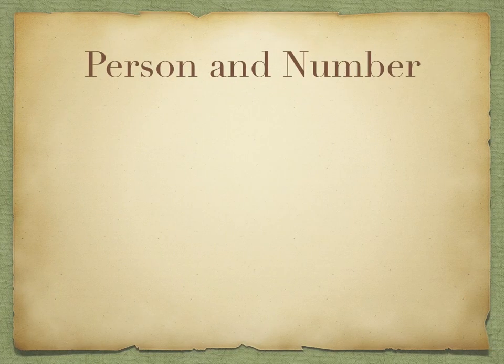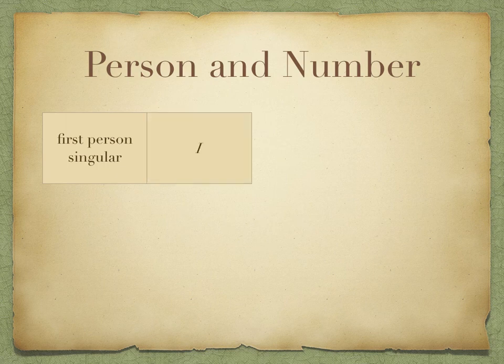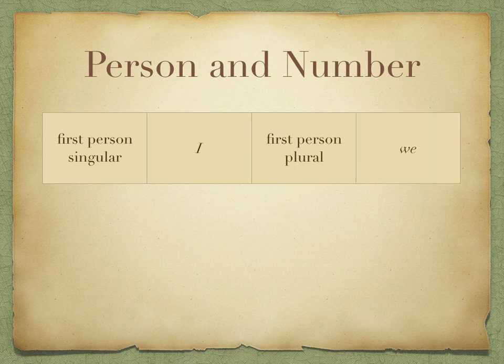Firstly, we're just going to go over person and number. There are three persons and two numbers, which gives us the six sets of endings that each verb has. First person singular — first person is talking about yourself, so if there's just one of you, in English this is 'I', and in the plural form it is 'we'.